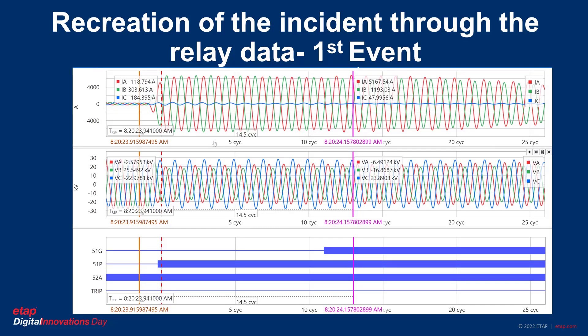Pre-fault, at the orange time cursor, we have a three-phase balanced system. You obviously cannot see detailed current curves because of the scale. However, you can see the voltage is looking balanced. I placed the orange cursor at the B-phase peak current of 303.613 A. Similarly, the peak phase voltage VB is 25.5492 kV. At the red dotted line, a fault occurs — a phase-to-phase A-B fault. The magenta cursor in the fault region shows peak current IA of 5,167 A. VB voltage dropped from 25 to 16 kV — that's 0.64 per unit.